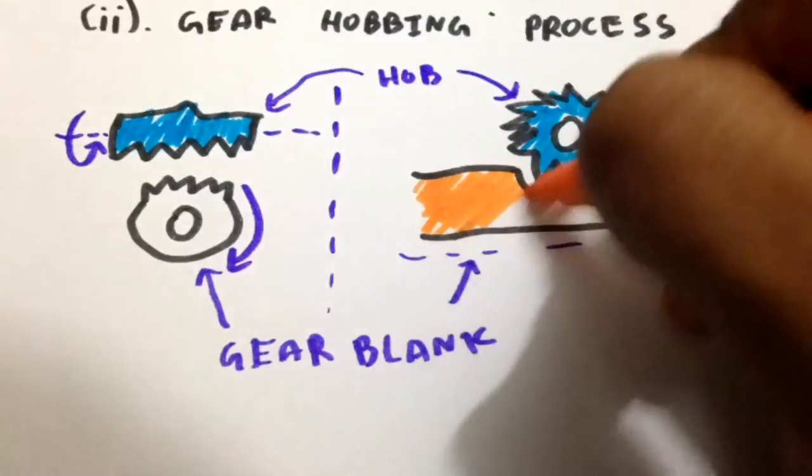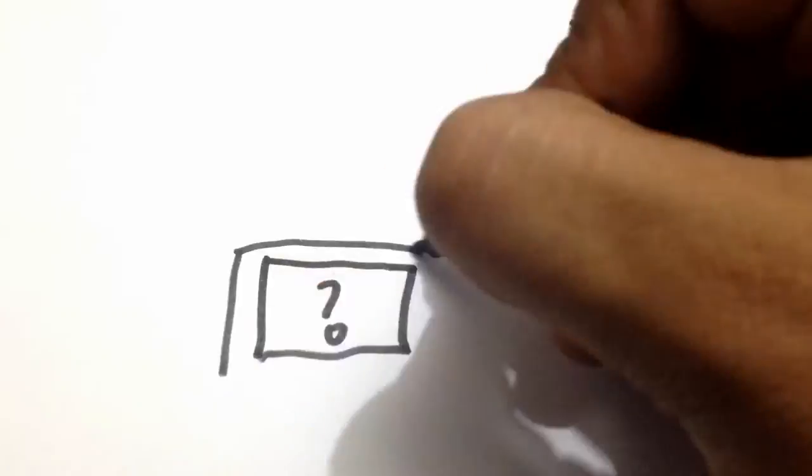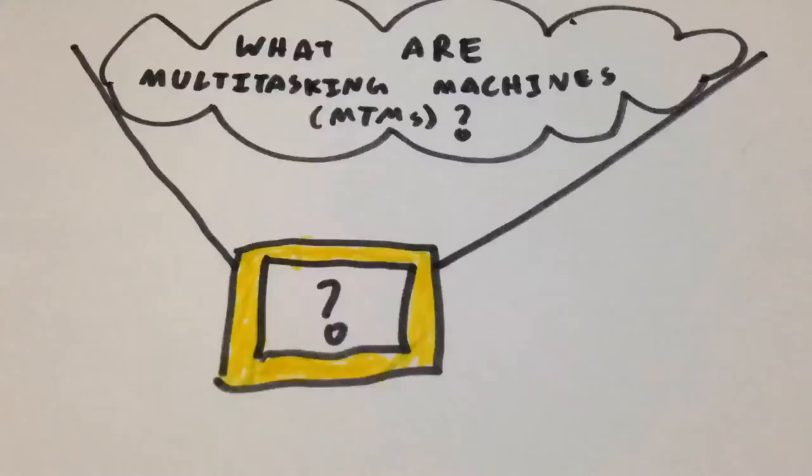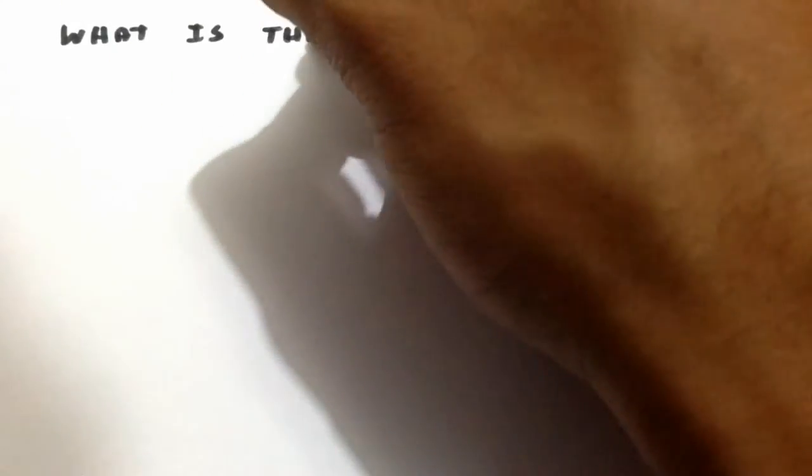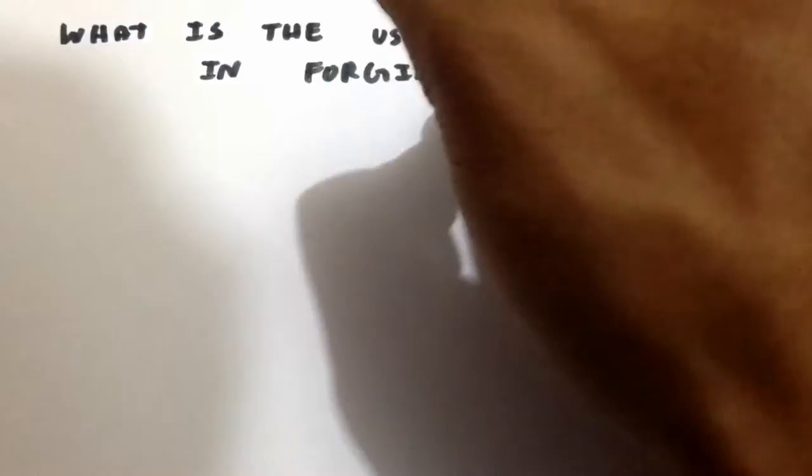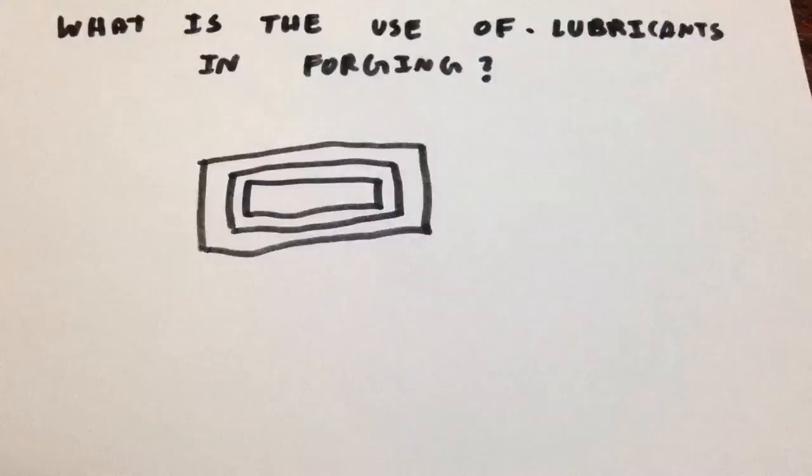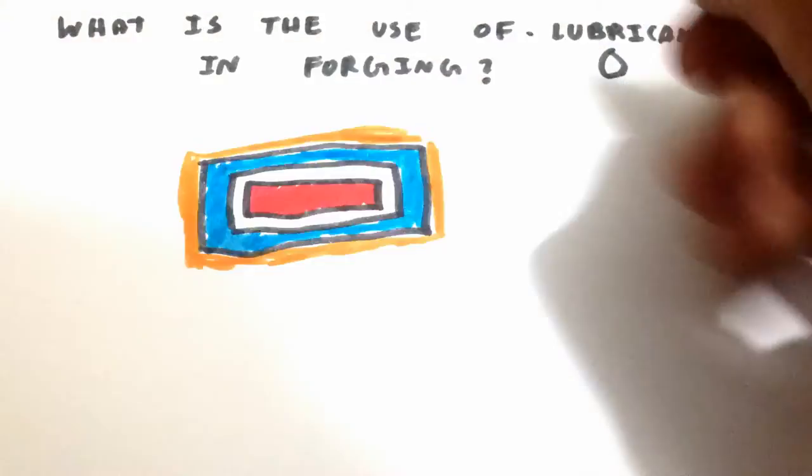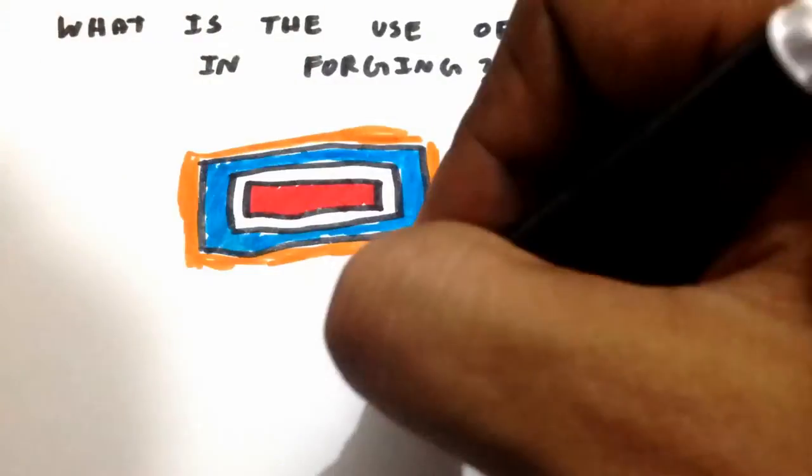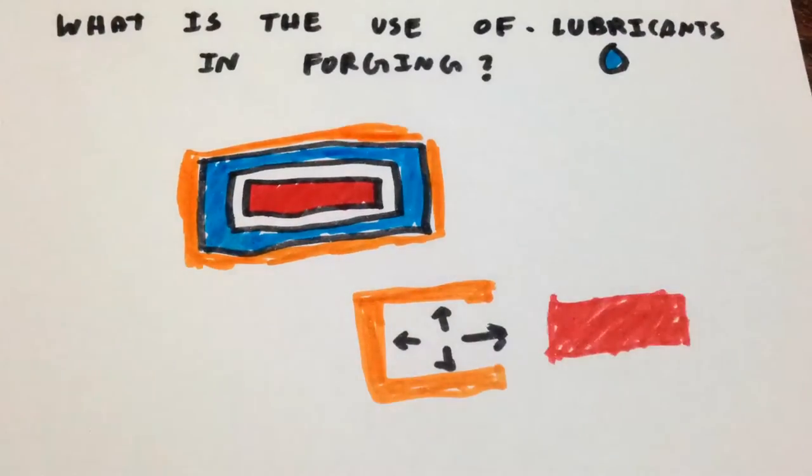Hence comes the end of the quick revision of machine tools. It's time for this episode's question: what are multitasking machines? It's time to answer our last episode's question: what is the use of lubricants in forging? The lubricant is used as a thermal barrier to restrict heat transfer from the workpiece to the die. It also acts as a parting compound to prevent the part from sticking to the workpiece.